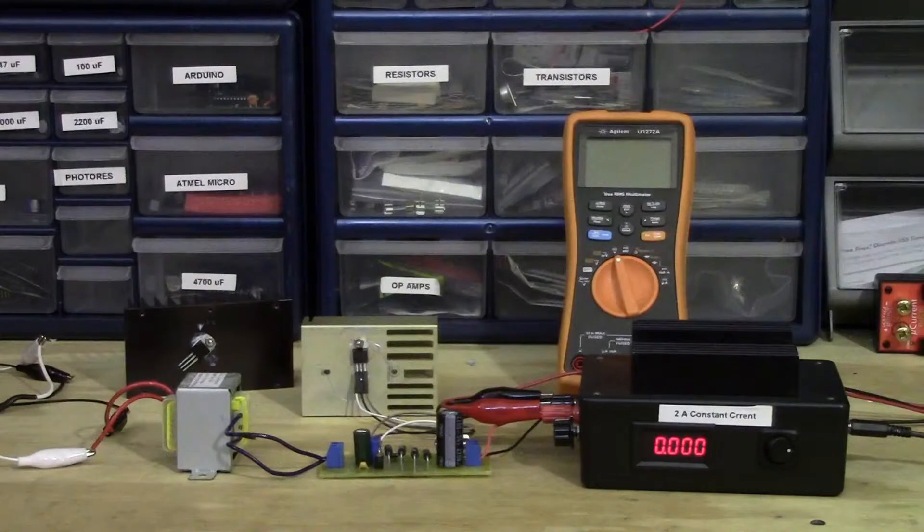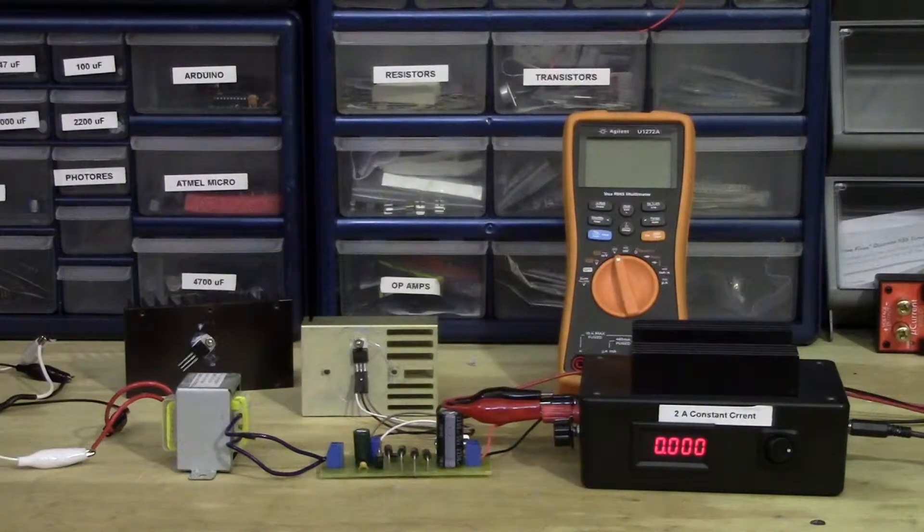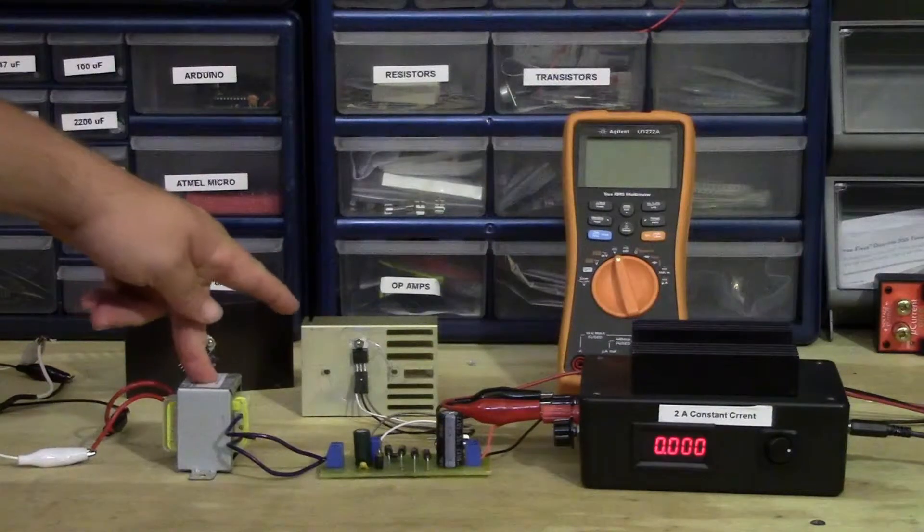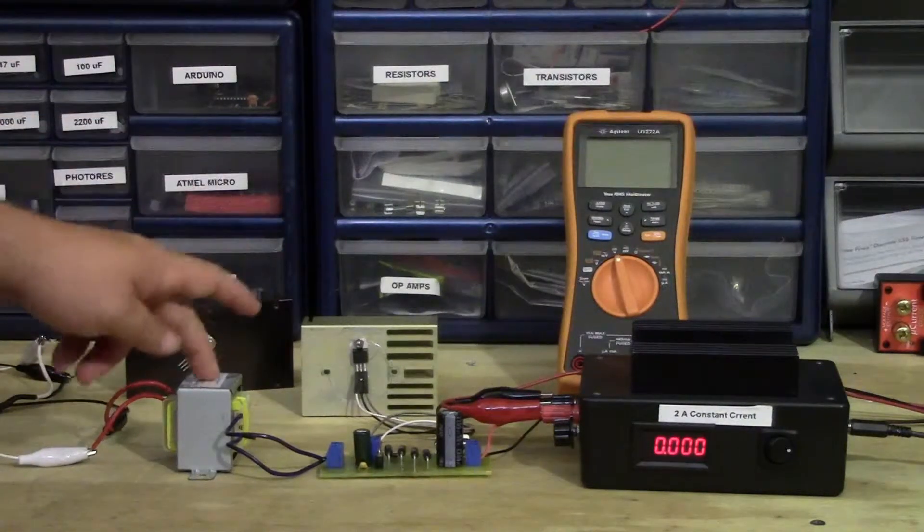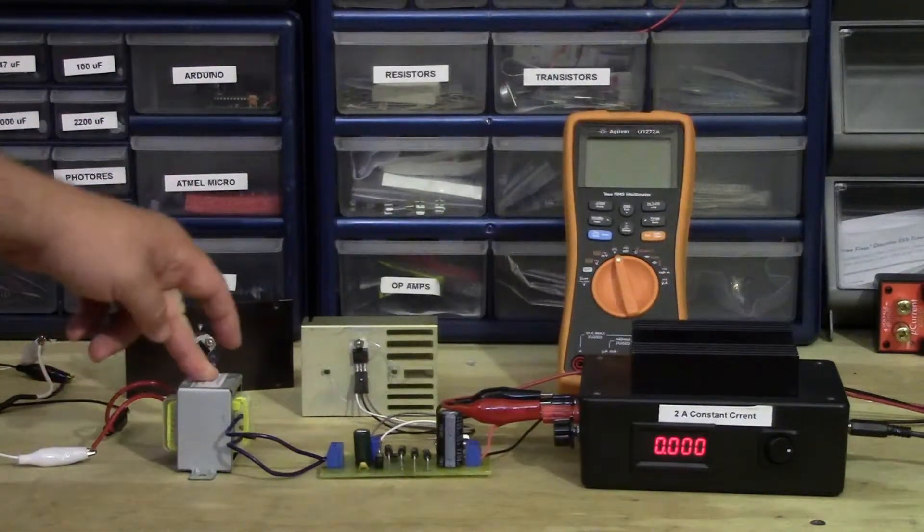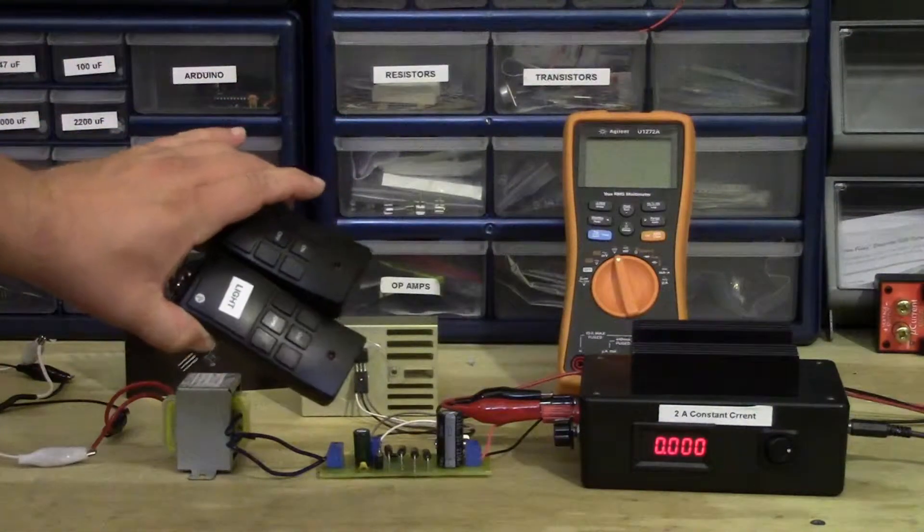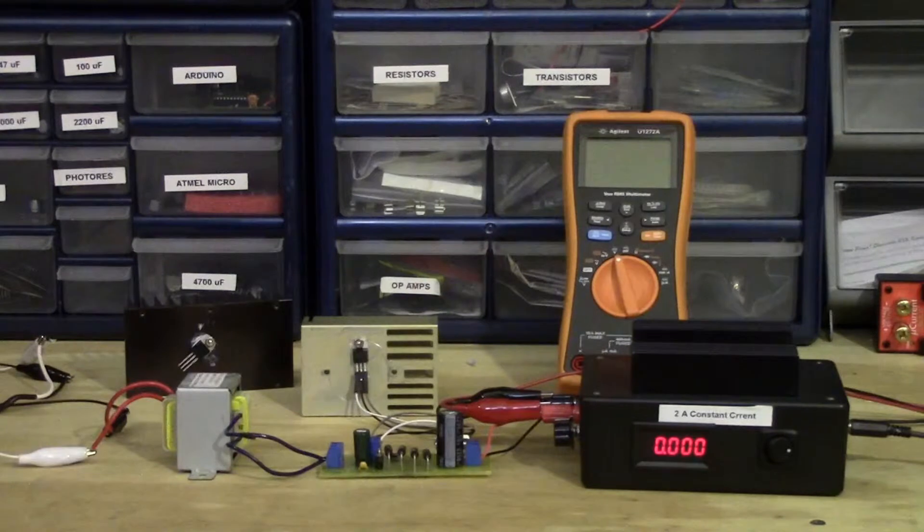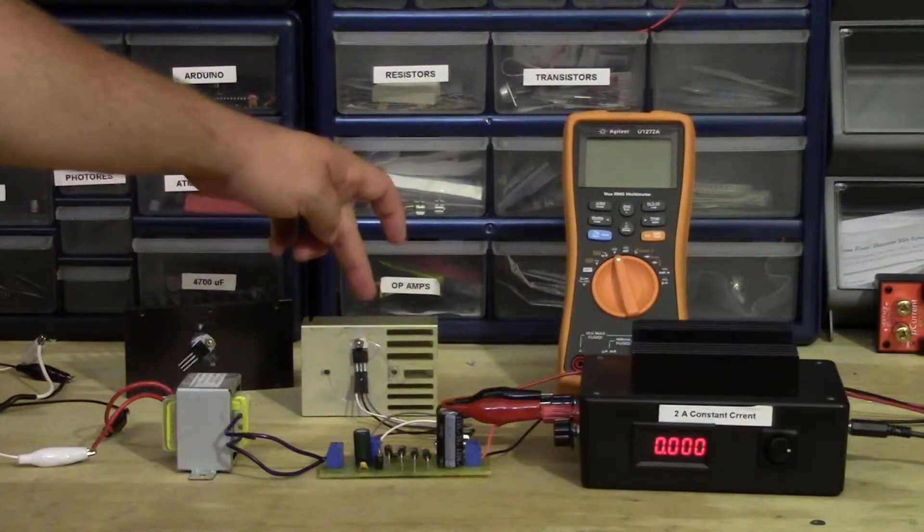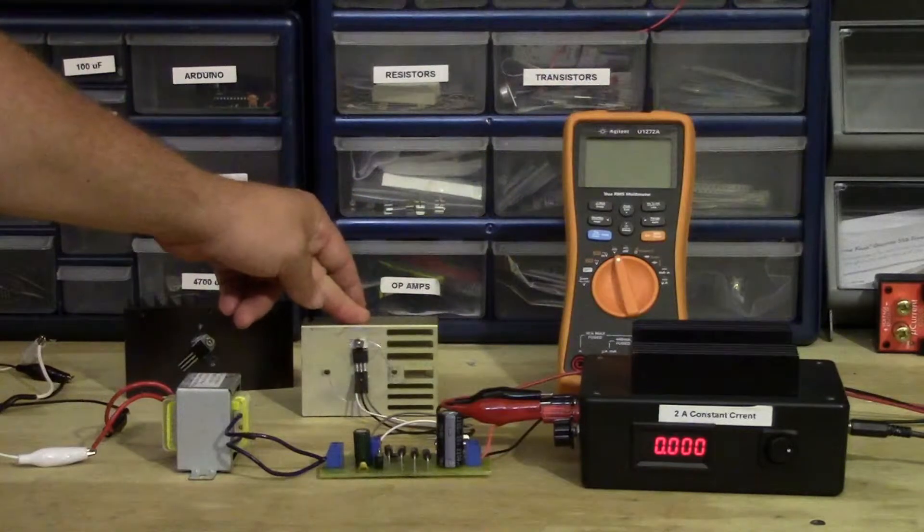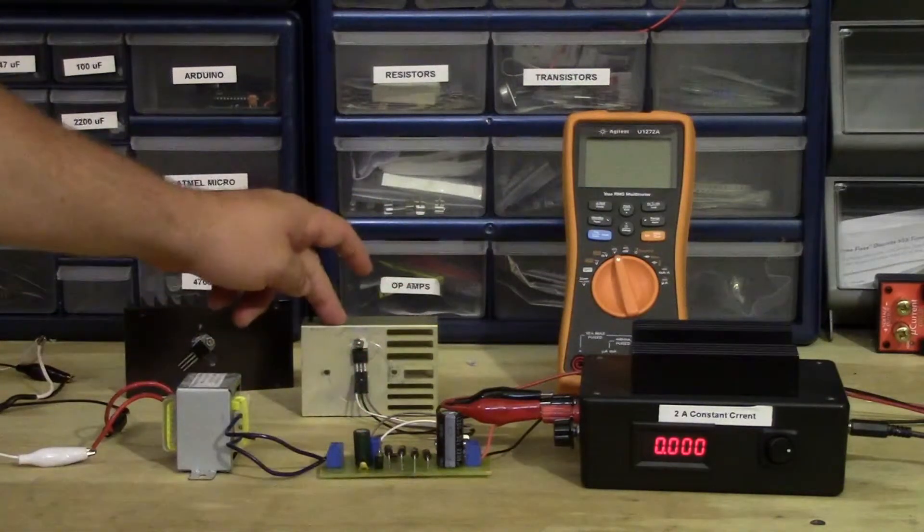To do that I've got a small test set up here. I've got the main AC transformer, 7.5 volt transformer that I plan to use in the power supply, connected to one of these on-off switches so that I can easily control it. I've got the 7805 power regulator connected to the heat sink and to the etched board.